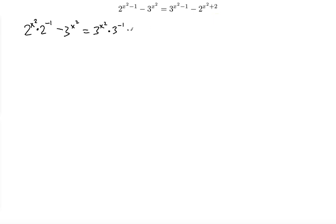I'm going to leave the second term alone, so I write minus 3^(x²). Then I split up the third term's exponent and write 3^(x²) times 3^(-1), in the same way I rewrote the first term. Then I rewrite the last term as 2^(x²) times 2², since the base is two to the square.